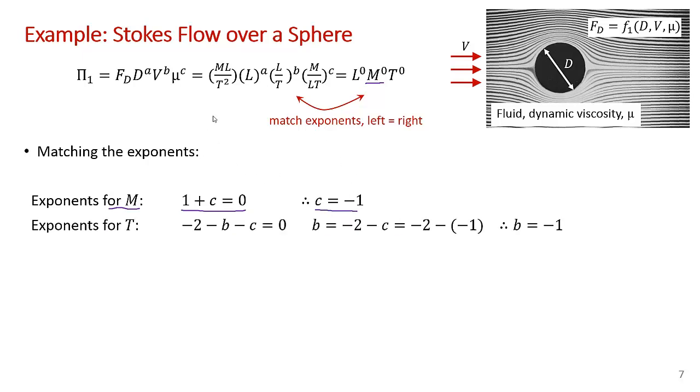Now we do the same thing for time. We have for this term -2, no time here, -b - c equals 0. So that's correct. Now we can solve for b, given that we know c. So b = -2 - c. We make that substitution for c, and you've got -2 + 1 gives -1.